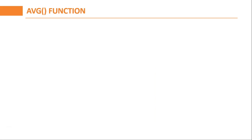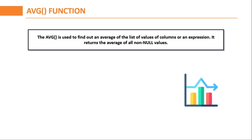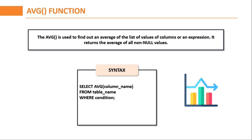Next, let us look at the AVERAGE function. The SQL AVERAGE function calculates the average value of columns of numeric types. It returns the average of all non-null values. The syntax is similar to that of COUNT and SUM — instead of those keywords, you replace it with the AVERAGE keyword. The syntax is: SELECT AVERAGE(column_name) FROM table_name WHERE condition. You can also specify the GROUP BY and ORDER BY clauses as per your requirement.